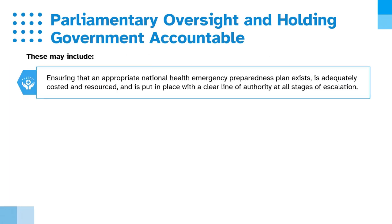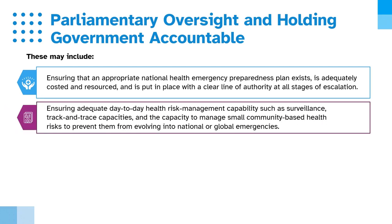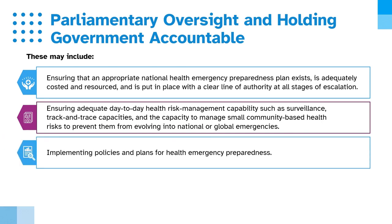Government responsibilities also include ensuring that an appropriate national health emergency preparedness plan exists, is adequately costed and resourced, and is put in place with a clear line of authority at all stages of escalation. This includes ensuring adequate day-to-day health risk management capability such as surveillance, track and trace capacities, and the capacity to manage small community-based health risks to prevent them from evolving into international or global emergencies, and implementing policies and plans for health emergency preparedness.